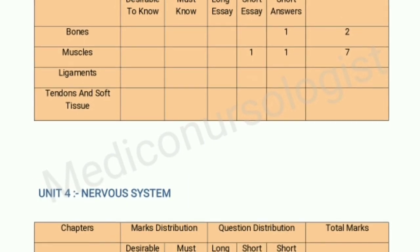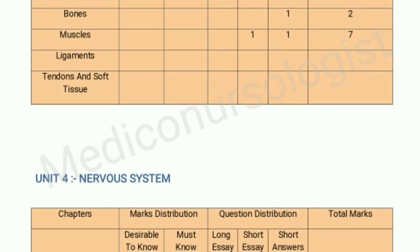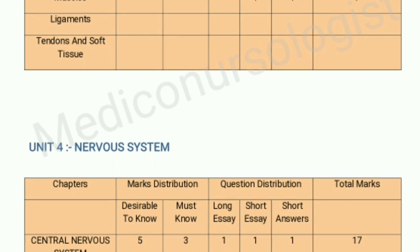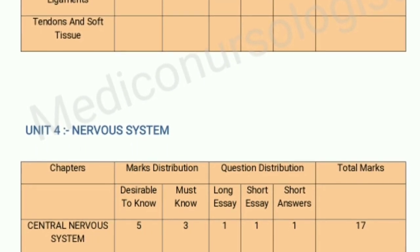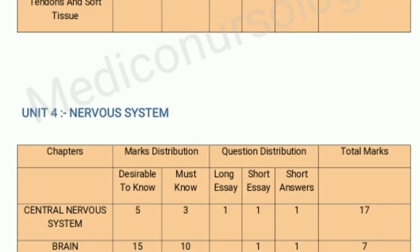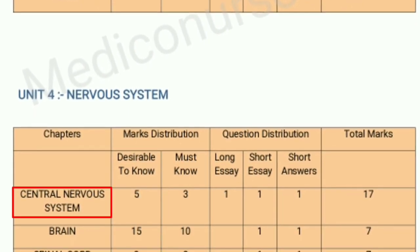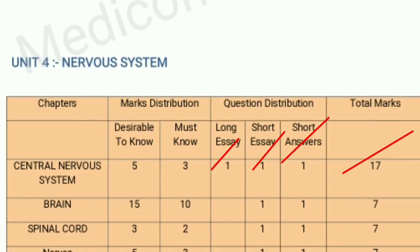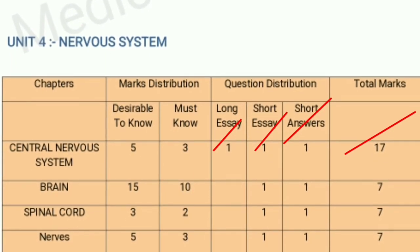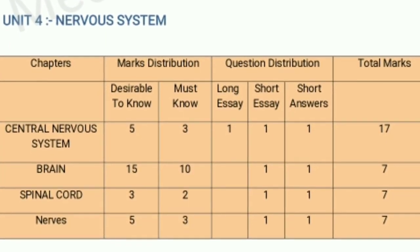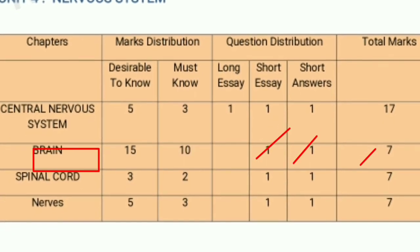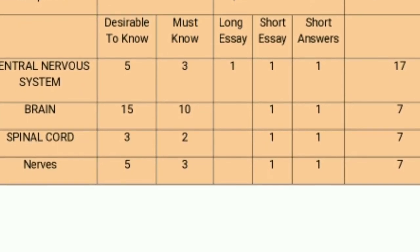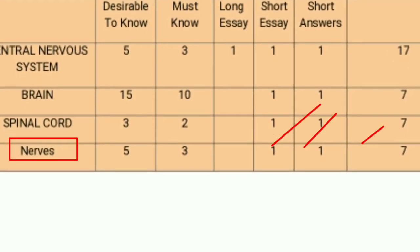Our fourth unit is the nervous system, which has 4 chapters: central nervous system, brain, spinal cord, and nerves. This is a very important unit because most of the questions come from it. The central nervous system chapter carries 17 marks — 1 question for 10 marks, 1 question for 5 marks, and 1 question for 2 marks. The brain chapter carries 7 marks with 1 question for 5 marks and 1 for 2 marks. The spinal cord chapter also carries 7 marks with the same distribution, and the nerves chapter carries the same marks distribution as well.